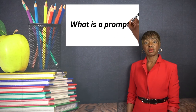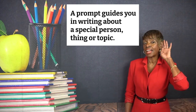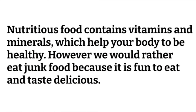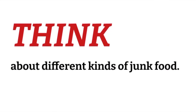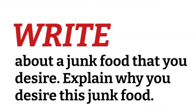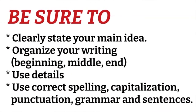Now let's use a prompt. A prompt guides you in writing about a special person, thing, or topic. Expository prompt: nutritious food contains vitamins and minerals which will help your body be healthy. However, kids would rather eat junk food because it's fun and tastes delicious. Think about a kind of junk food, write about a junk food that you desire, and explain why you like it. Be sure to organize your ideas and use details, correct spelling, capitalization, punctuation, grammar, and complete sentences.